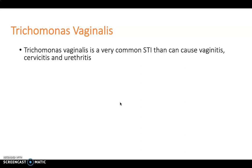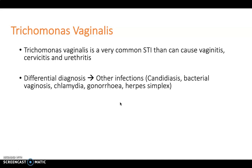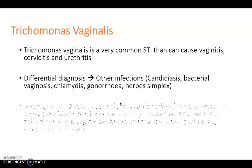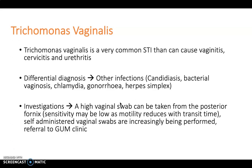Trichomonas vaginalis is a very common STI that can cause vaginitis, cervicitis, and urethritis. When considering differential diagnosis, other STIs should be considered such as bacterial vaginosis, chlamydia, gonorrhea, and herpes simplex. For investigations, a high vaginal swab can be taken from the posterior fornix — patients can do this themselves or it can be done in clinic, though sensitivity may be low as motility reduces with transit time. Patients should be referred to a GUM clinic for formal diagnosis, and contact tracing should be undertaken.